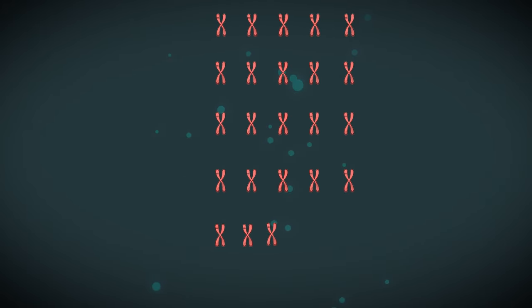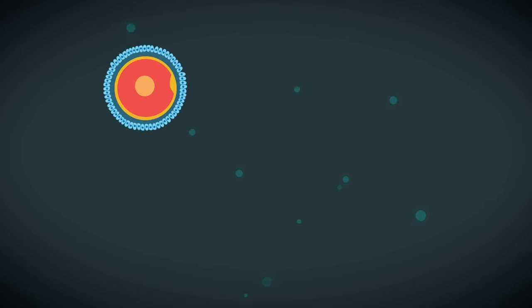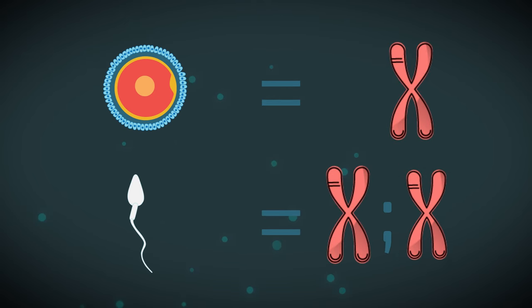Instead of 46 chromosomes, so 23 pairs, they just have 23 chromosomes in total, 22 autosomes and one sex chromosome or allosome. An ovum will always have an X chromosome but the sperm will have an X or a Y.